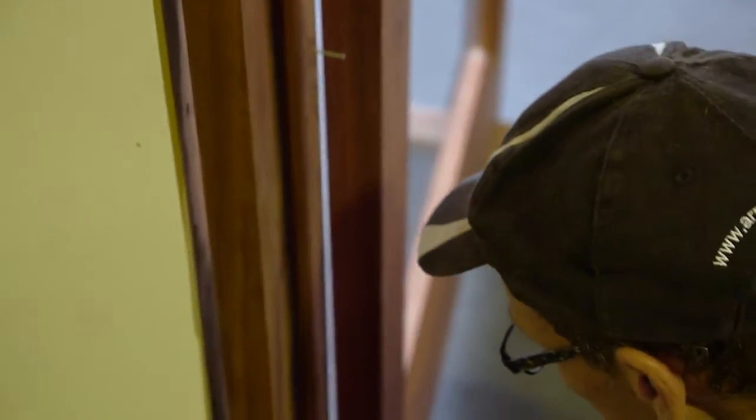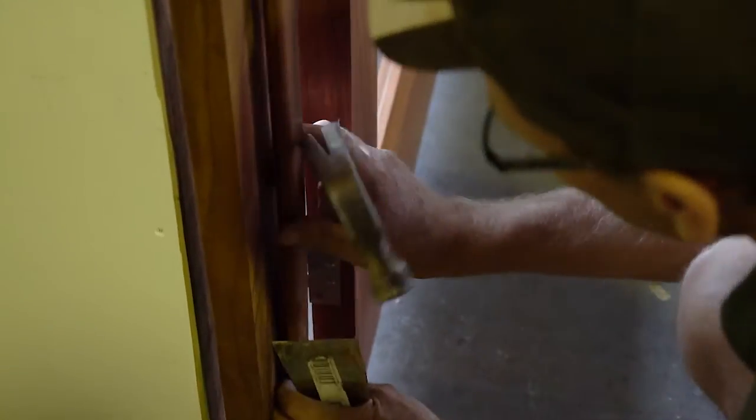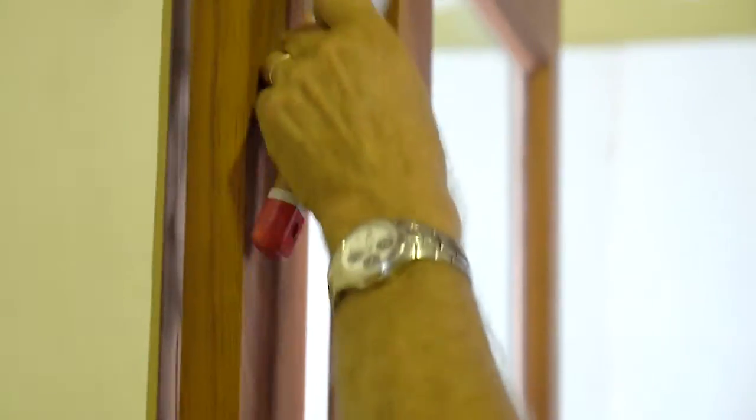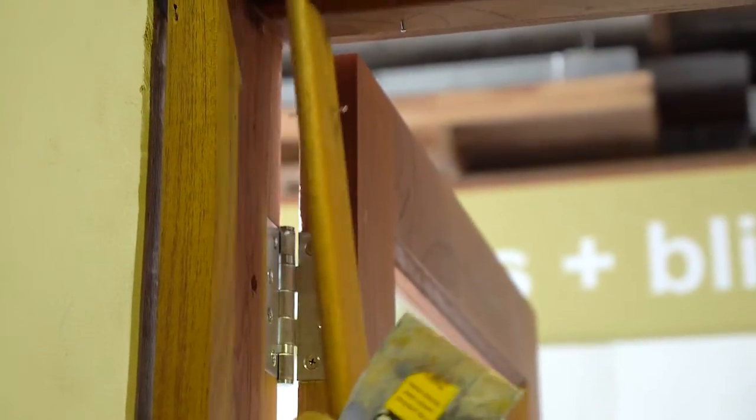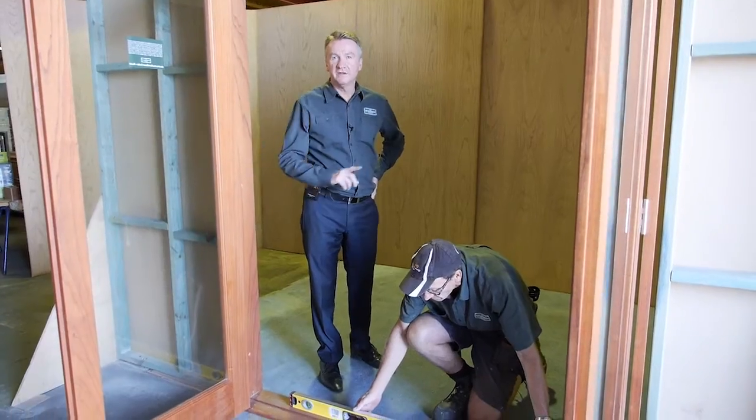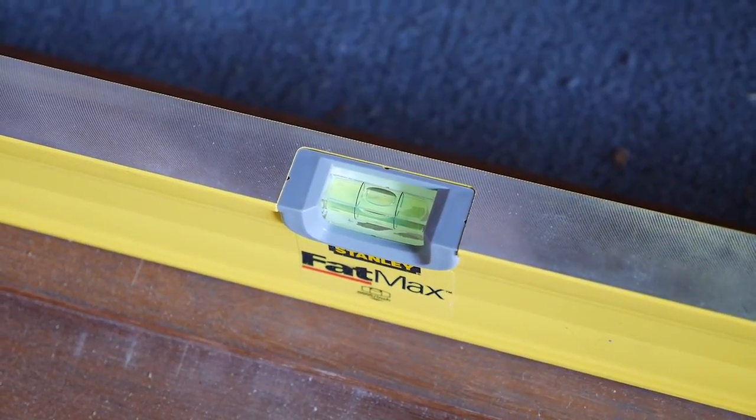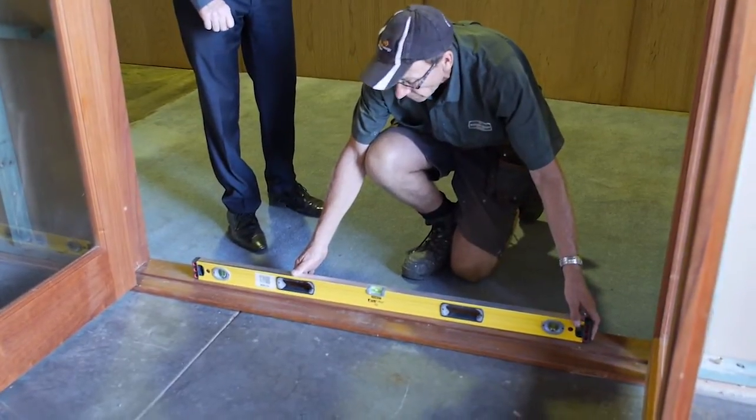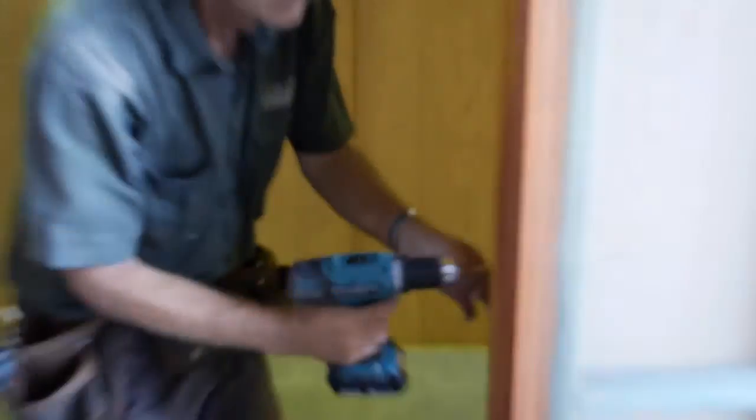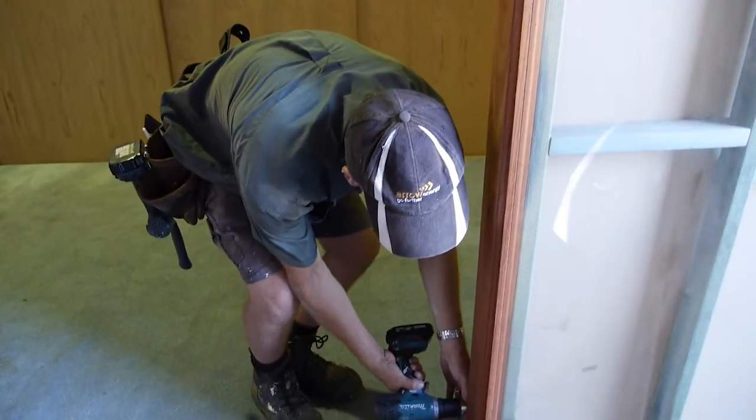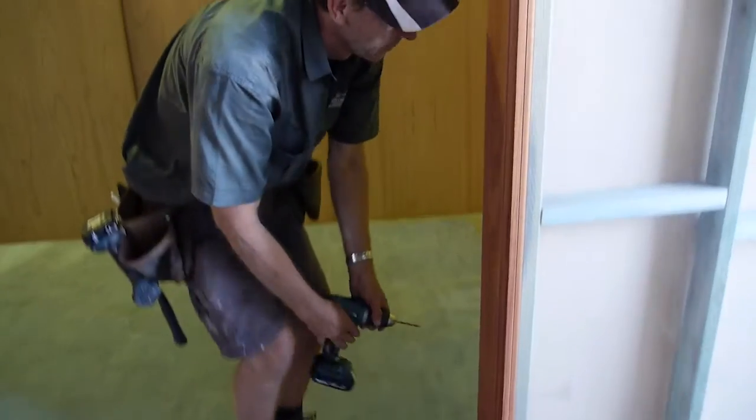So what we're going to do now is remove the door stops. The reason we do this is because we're going to hide all the frame fixings behind the stop. That way you get a nice neat finish. And once you've made sure that the jam is plumb, you need to make sure that the sill across the bottom is level. We would recommend that the frame is fixed with galvanised button screws rather than using a nail gun, as this can distort the frame.